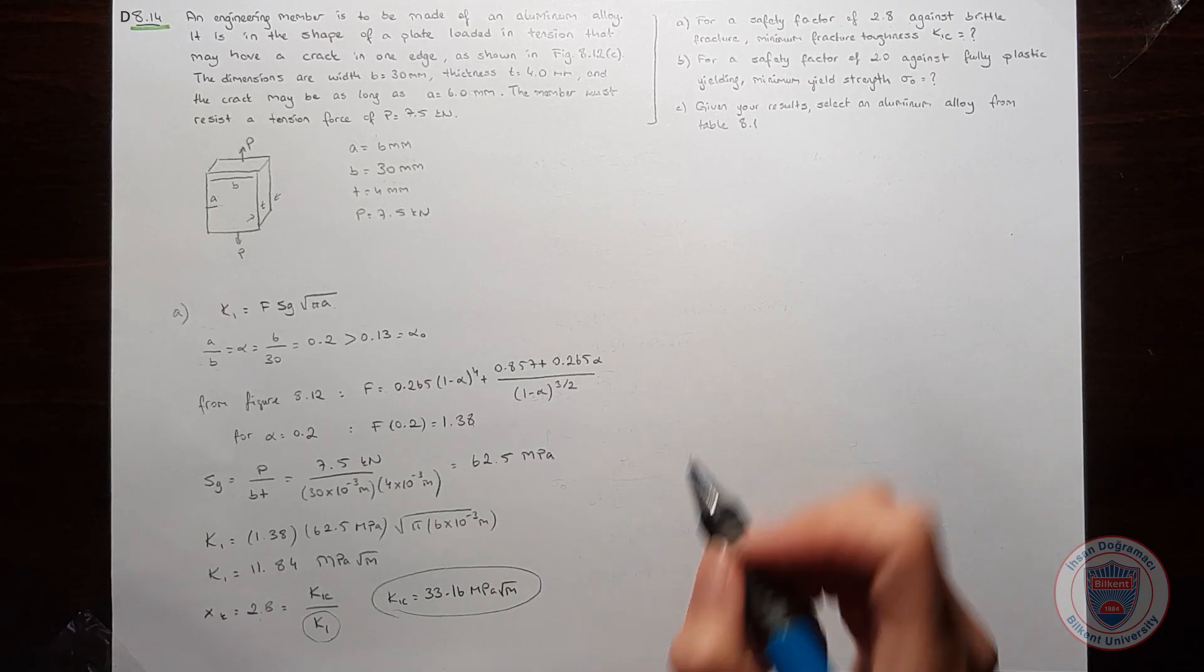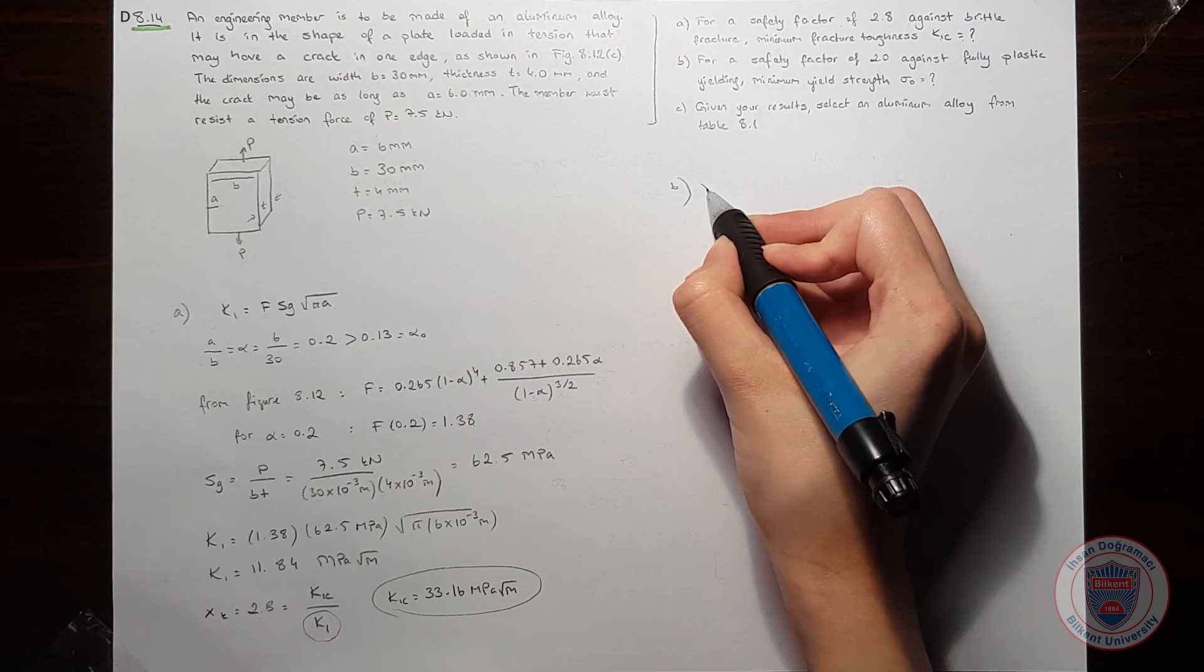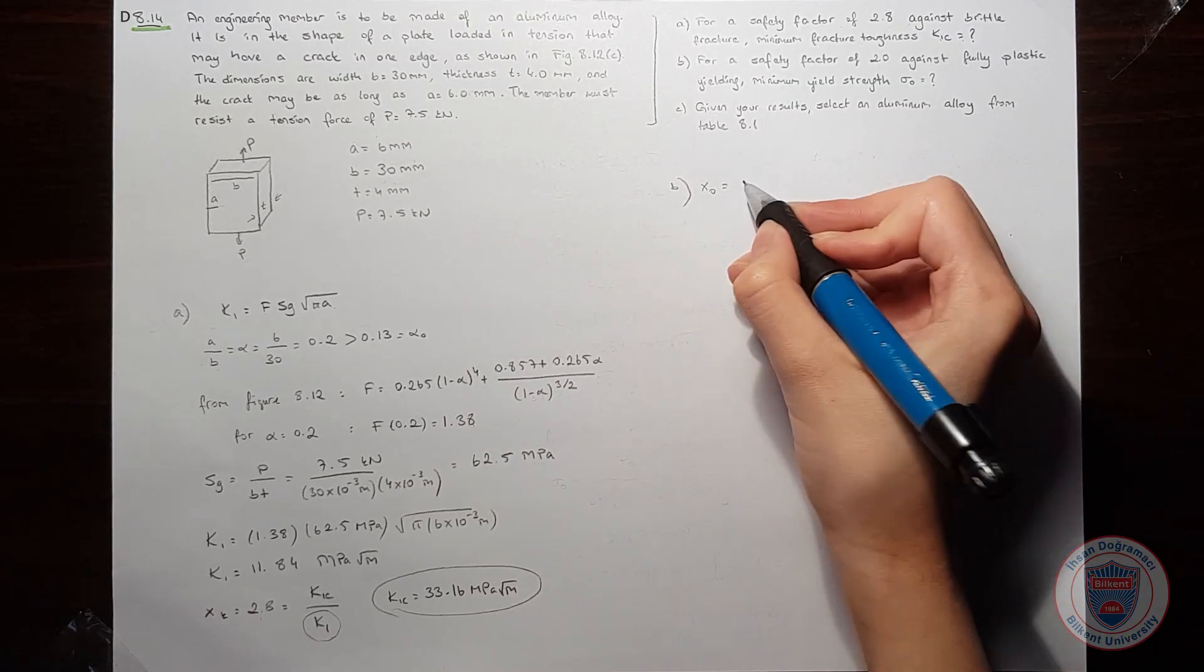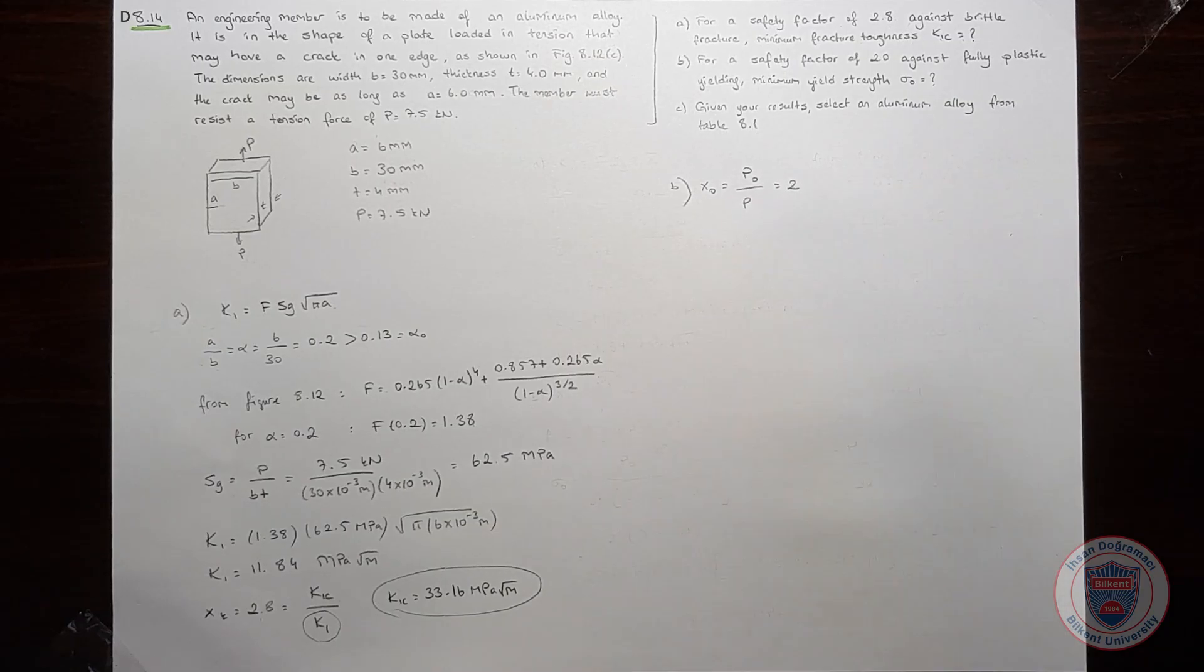Now let's solve part B. In part B, we know that the safety factor, which is p0 over p, is equal to 2. Again, it is against fully plastic yielding.